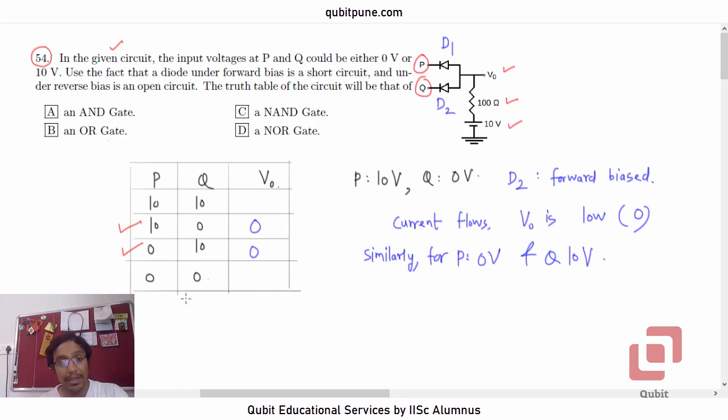Let's now go to the last combination, 0, 0. If both inputs are low, if P is at 0V and so is Q, what will happen? Even here, both D1 and D2 will be forward biased, which means current will flow. Now, because the current is flowing through the resistor, 100 ohm, V0 will again be low. That's it.